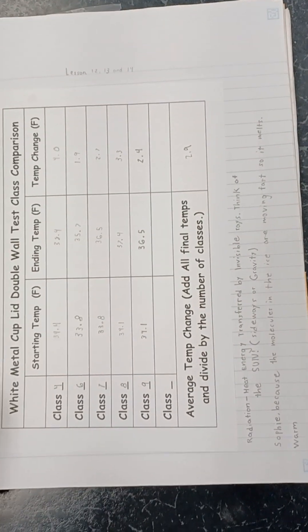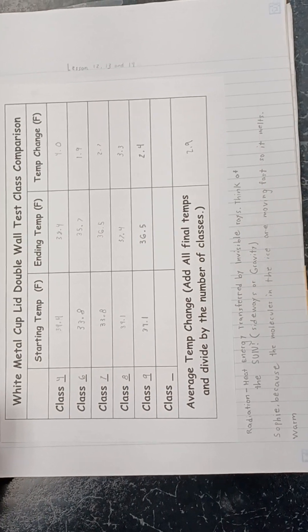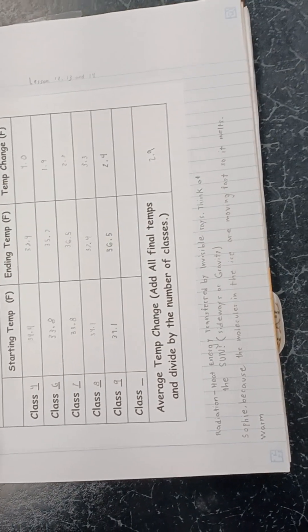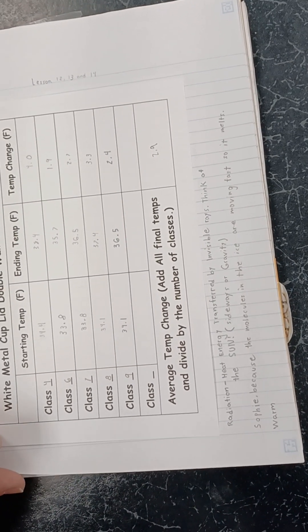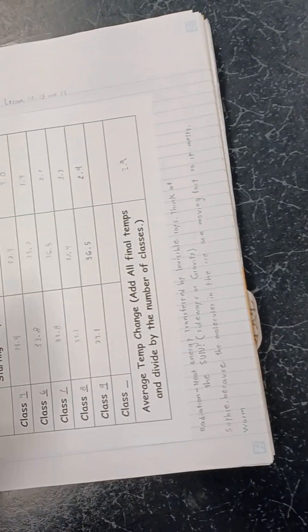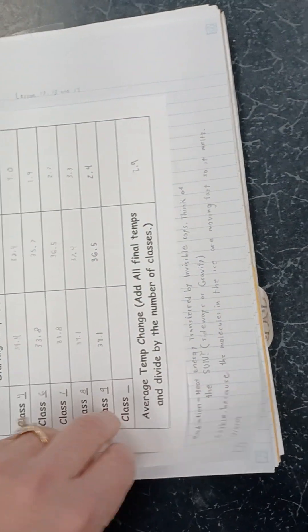Then we combined 12, 13, and 14, and we started looking at the metal cup with double glass and were comparing data with other classes. So I combined those.